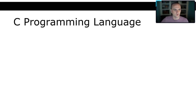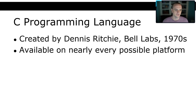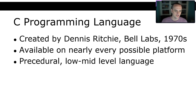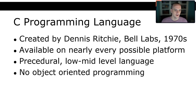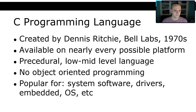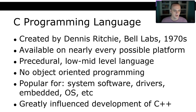The story of C++ begins with the C programming language, created by Dennis Ritchie in the 70s. C is available everywhere — your toaster probably runs C. It's a procedural, low to mid-level language with no object-oriented programming built in — no classes, inheritance, or polymorphism. C is very popular for system software, drivers, embedded software, operating systems, and game programming. It greatly influenced the development of C++.